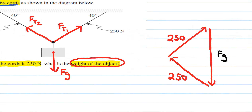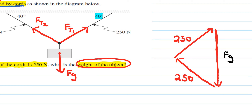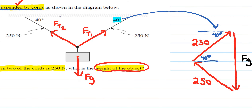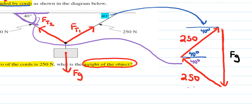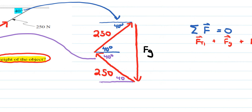We also have to consider the angles. There's 40 degrees, and if I go to my triangle, that translates to 40 degrees right there. Using alternate interior angles, the corresponding angle on the other side of the triangle is also 40 degrees, so we have 40 degrees on both sides. That means the remaining angle at the top must be 50 degrees.